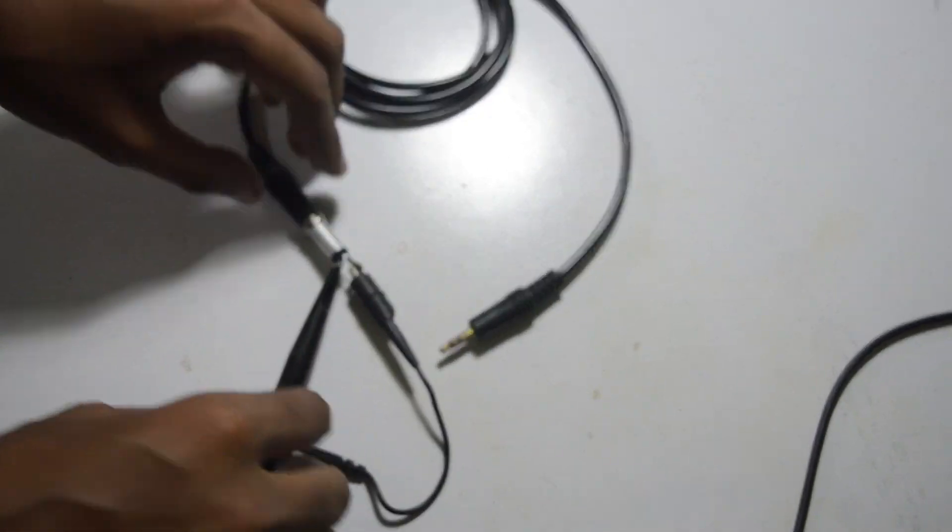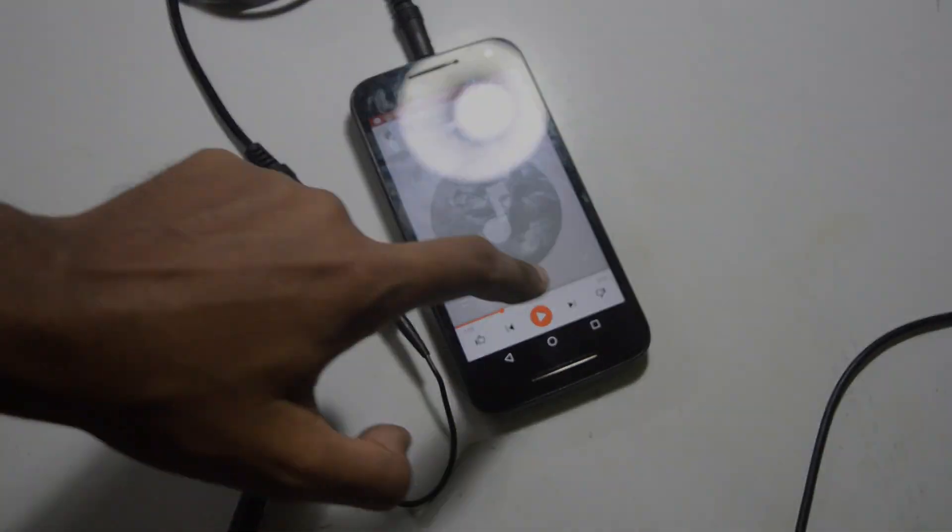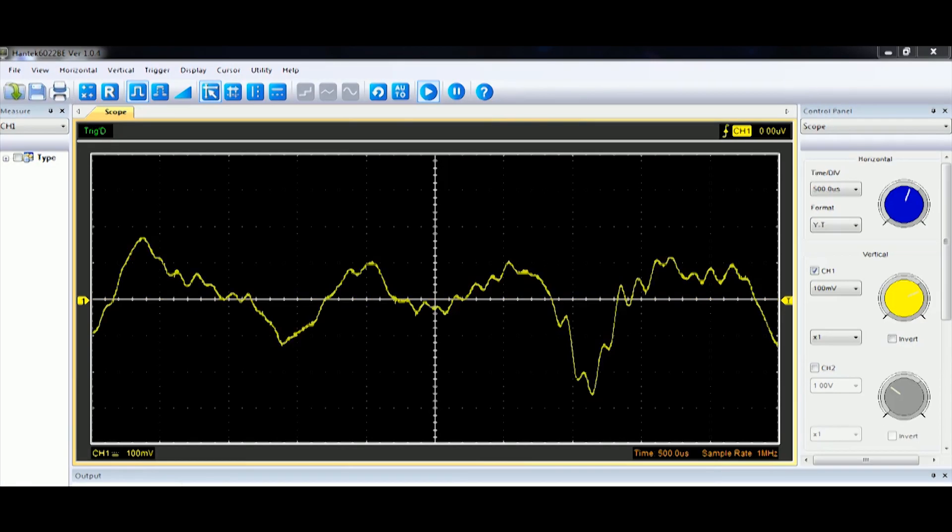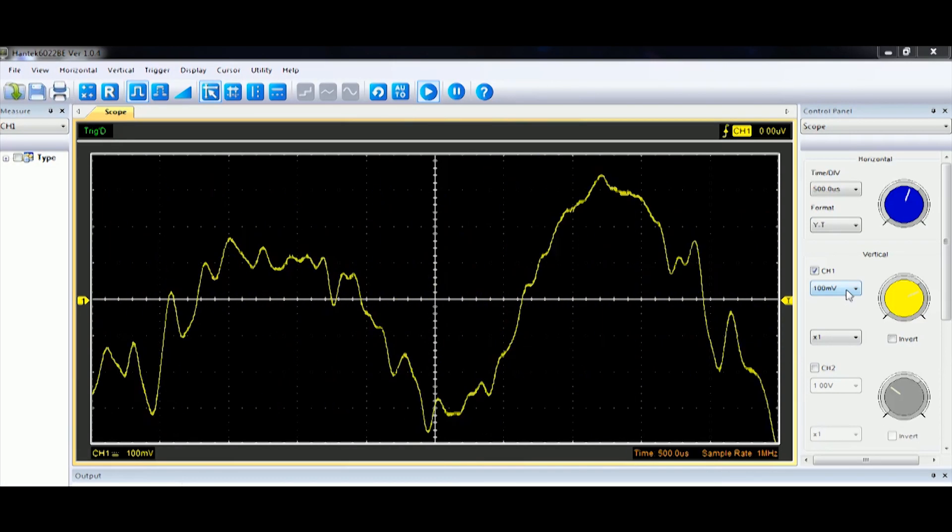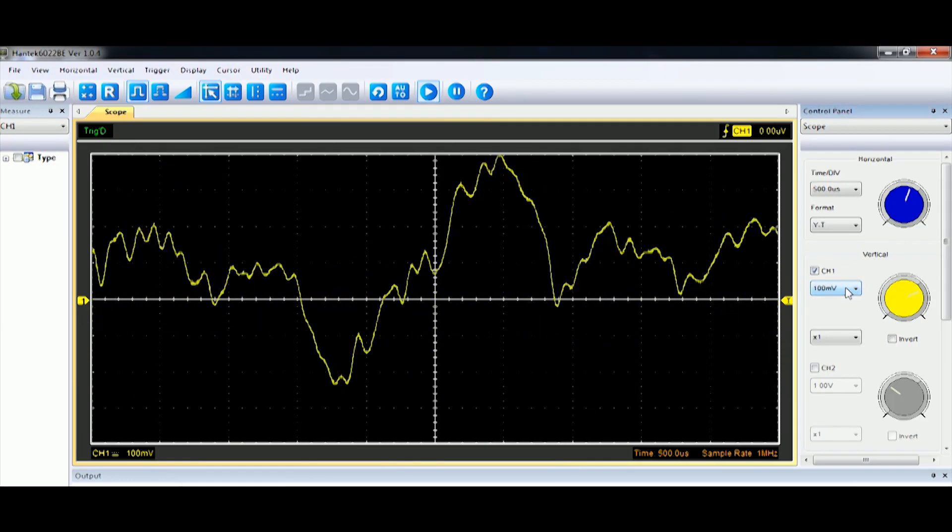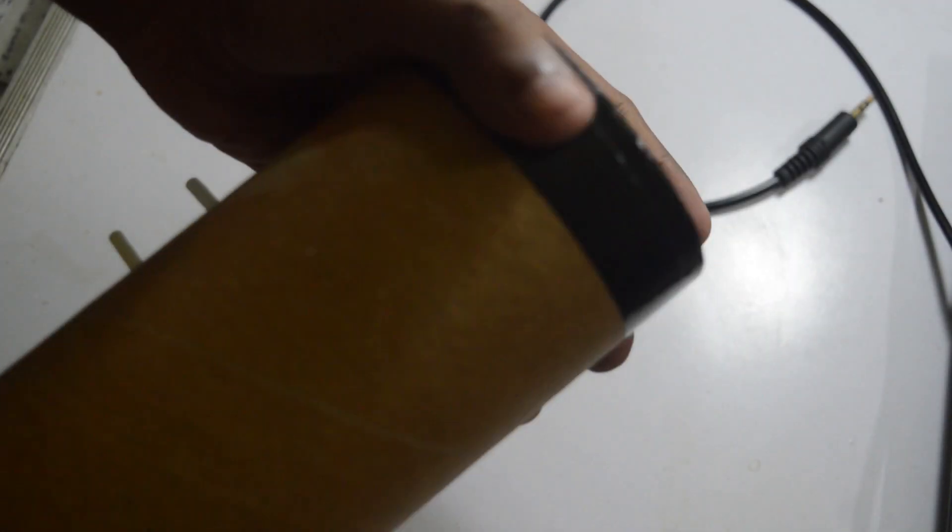If we look closer to the audio output of a smartphone using an oscilloscope, we can see that the signal amplitude is in the range of millivolts, which is not sufficient enough to energize the DC motor.